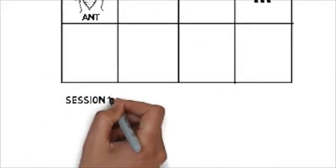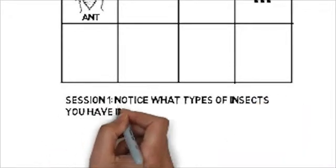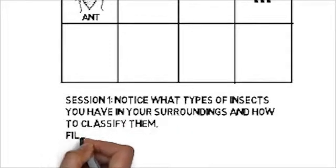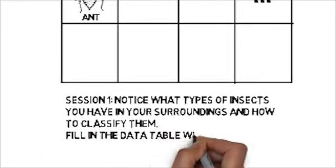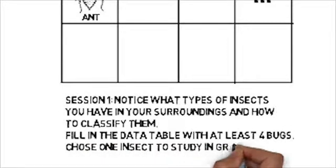We are now ready to enter the field. In session one, just notice what types of insects you have in your surroundings and get used to learning how to classify them. Fill in the data table with at least four different insects and choose one in particular to study in greater depth during session two.